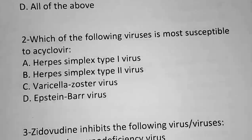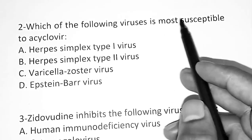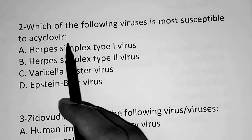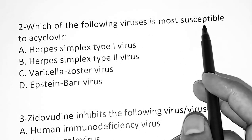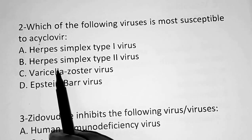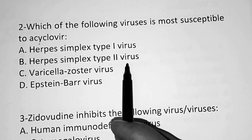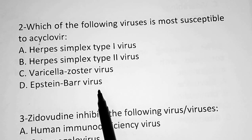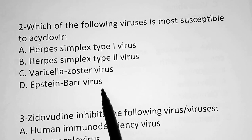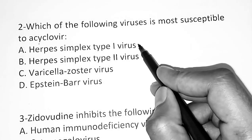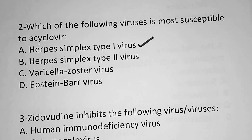Question 2: Which of the following viruses is most susceptible to acyclovir? Option A: herpes simplex type 1 virus, Option B: herpes simplex type 2 virus, Option C: varicella zoster virus, Option D: Epstein-Barr virus. The correct answer is Option A — herpes simplex type 1 virus is the most susceptible virus to acyclovir.